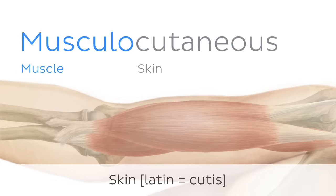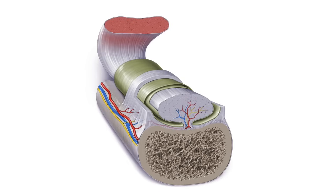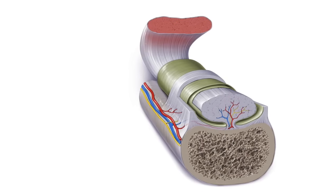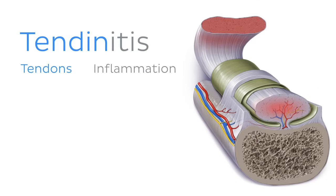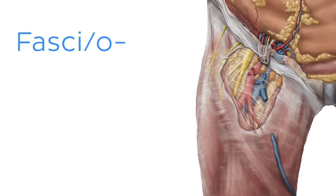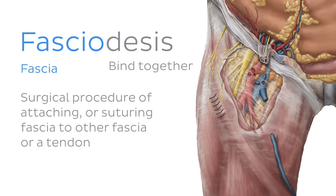I'd also like to show you a few terms which do not necessarily refer directly to muscle but to their associated tissues. Tendo or tendino, of course, relates to the tendons. For example, tendinitis is inflammation of a tendon. Similarly, fascio refers to fascia, a connective tissue covering muscles. You may see it in terms like fasciodesis, which is a surgical procedure of attaching or suturing fascia to other fascia or a tendon.